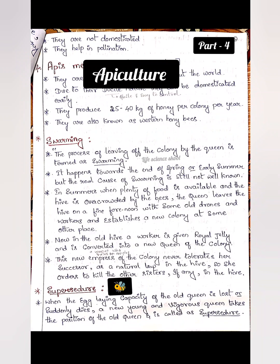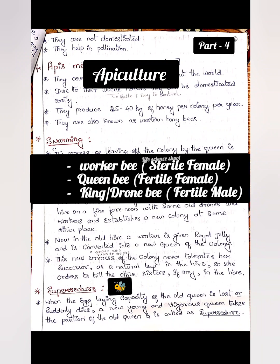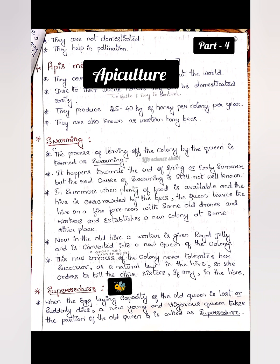When you look at the three types — worker, queen, and drone — the queen and drone are going to mate. The queen is a fertile female, she is the reproductive female. The worker is also female but she is sterile. The drone is a fertile male. These three divisions of labor are present in the colony.